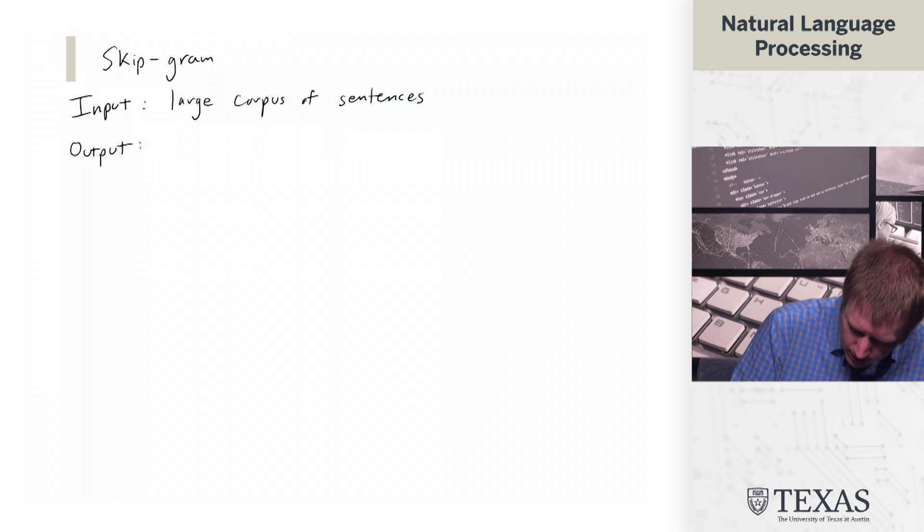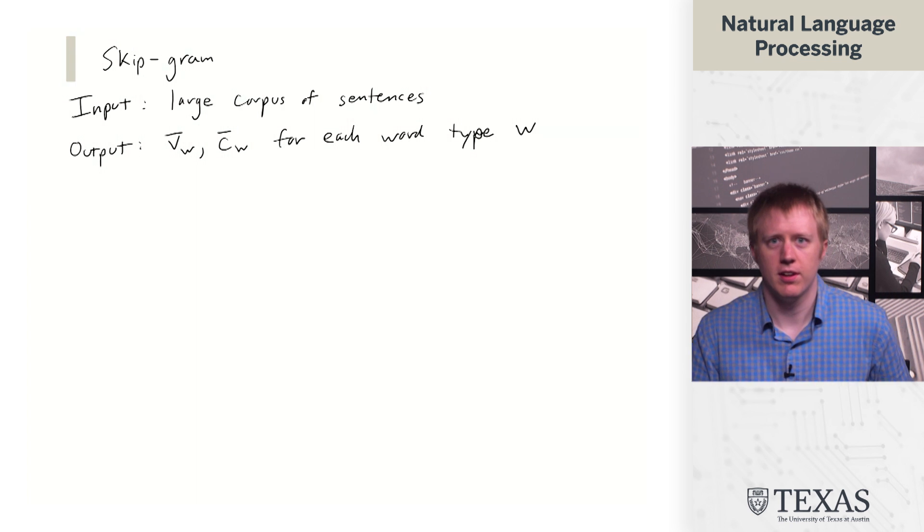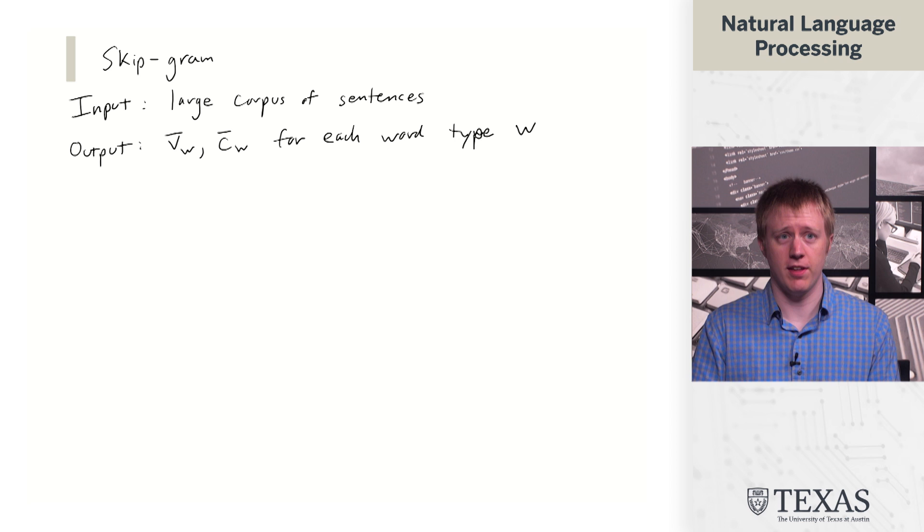And the output is going to be vectors V and C for each word type W. So I'm going to use type here to reflect that for the word movie, there's going to be a single V and a single C.